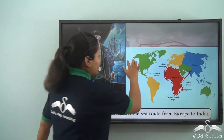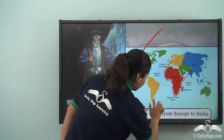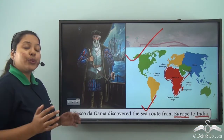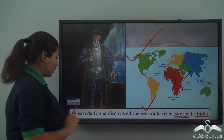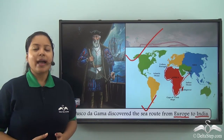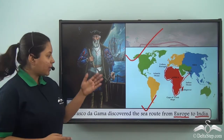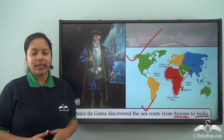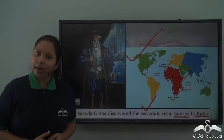Have a look at this picture — this is the sea route from Europe to India. Do you know who discovered this? It was discovered by Vasco da Gama. He was a person who did a great voyage and discovered the sea route from Europe to India. Because of this there was development in trade relations, and even today we have those relations which help us earn money.